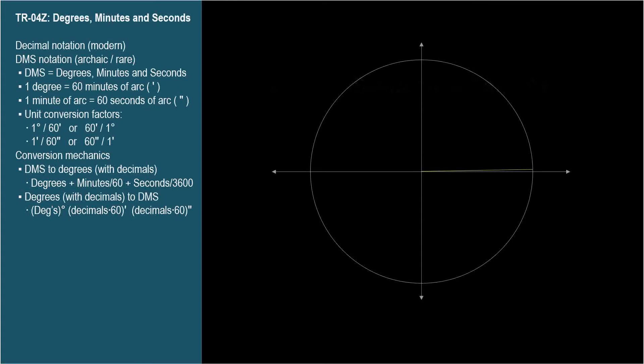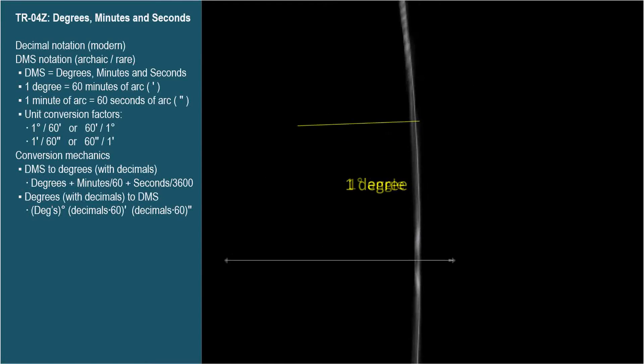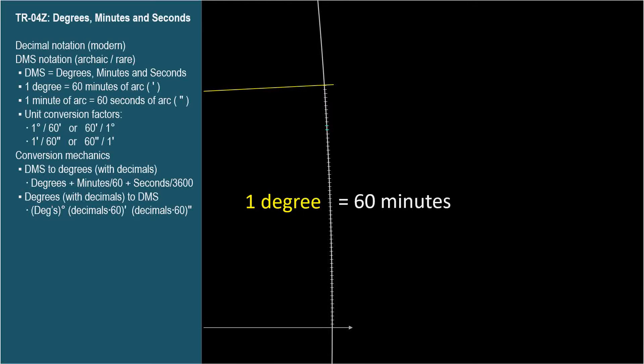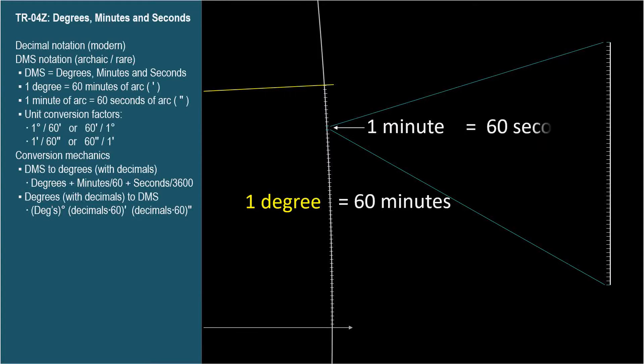In this system, partial degrees are expressed in minutes and seconds. One degree is divided into 60 minutes, or 60 minutes of arc, and each minute is divided into 60 seconds of arc. It sounds like I'm talking about parts of an hour instead of parts of a degree.